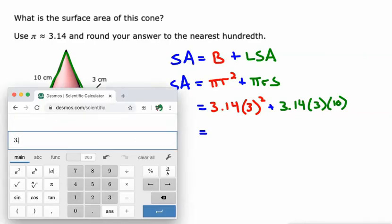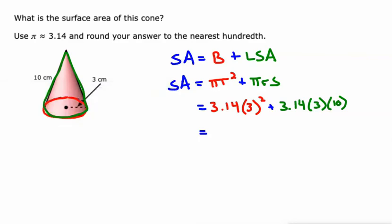Let's punch this into the calculator. 3.14 times 3 squared or 9, plus 3.14 times 3 times 10, or times 30 I guess would have been a faster way to type that in. 122.46. And that is measured in centimeters squared or square centimeters. So just got to identify the necessary measurements and go from there.